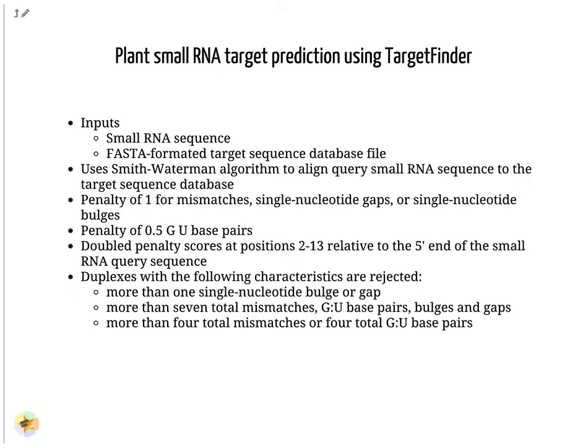Now we will look at some important details about microRNA target identification in plants. In animals, usually base pairing in the seed region of the microRNA, that is positions two to eight, is enough for target recognition. Plant microRNAs require more stringent base pairing — generally a near-perfect pairing in the five-prime region and substantial pairing in the three-prime region is necessary. Due to this strict pairing mechanism, plant microRNAs have a significantly smaller number of target genes. For this reason, we use a plant-specific microRNA target prediction algorithm called TargetFinder.